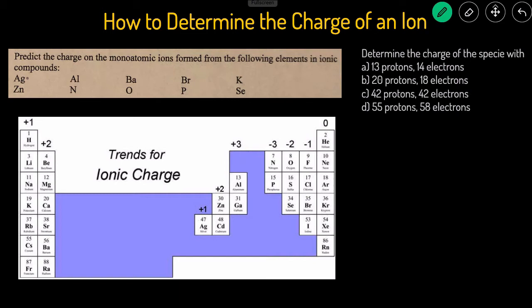So for this first one, for Ag, Ag would just be positive 1, because we see that right there. Al, aluminum is over here, so it'll be positive 3. So we can just use this table to help us do the rest of them. Like Ba is in the second column, so it'll be positive 2, and Br is in the halogen column, so it'll be negative 1.